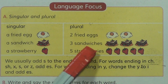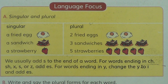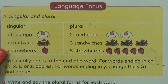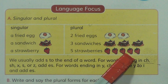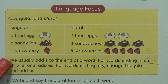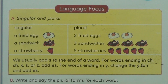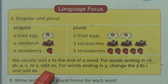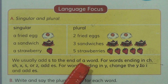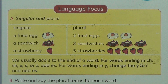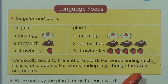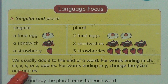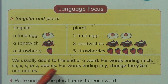We usually add -s to the end of the word. For words ending in C, S, X, Z, and R, we add -ES to the end of the word.